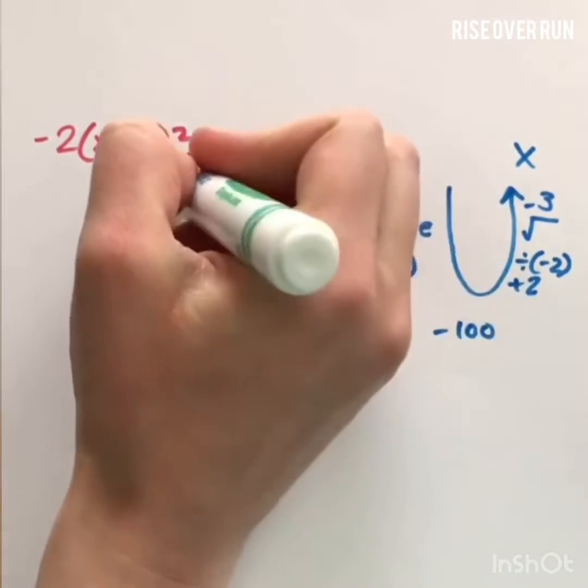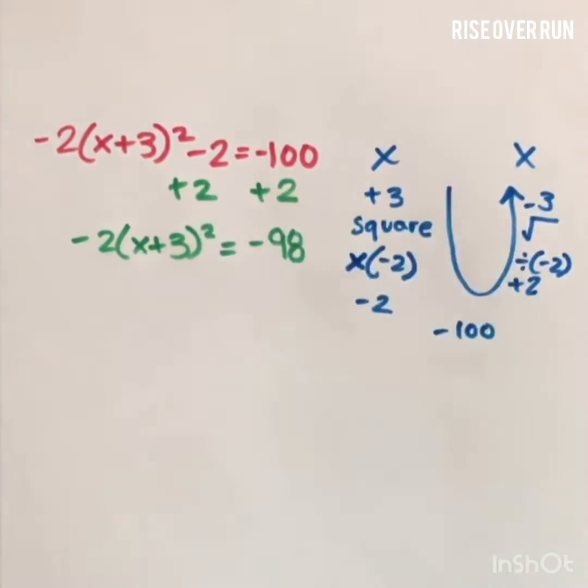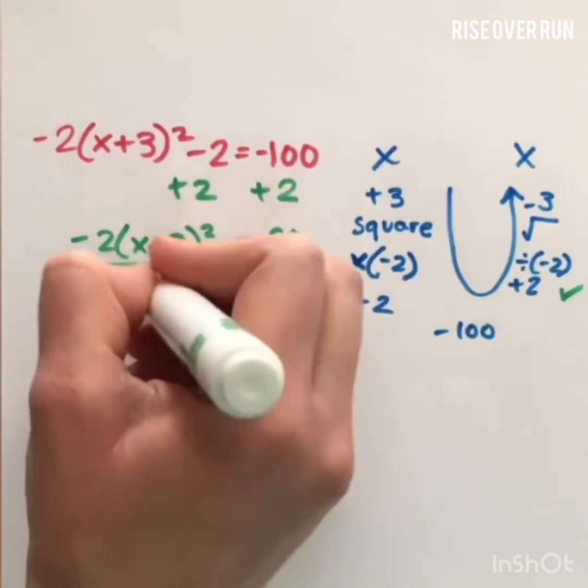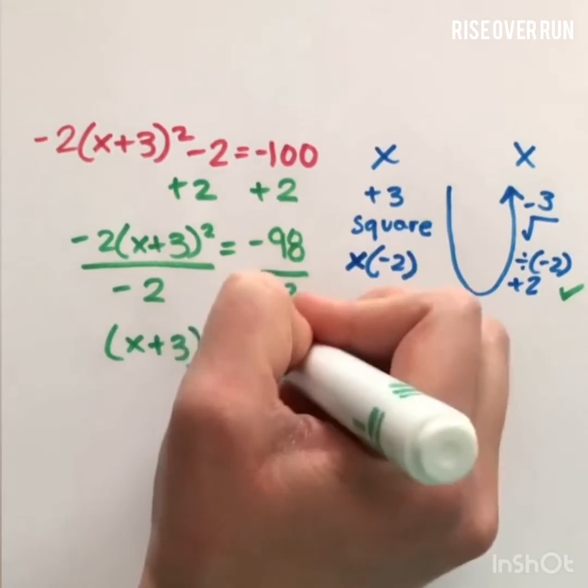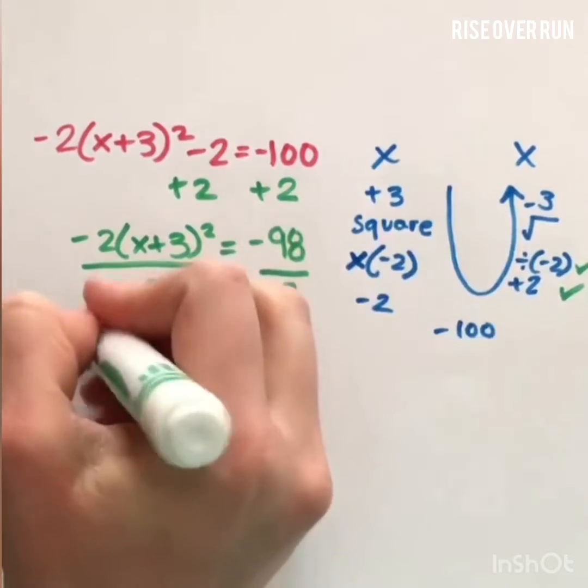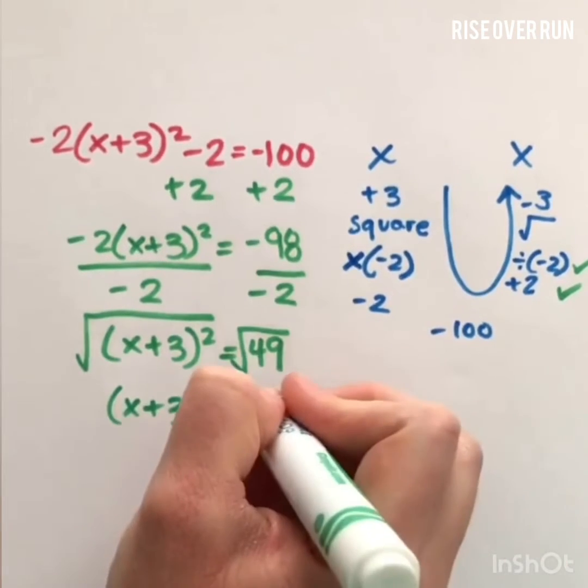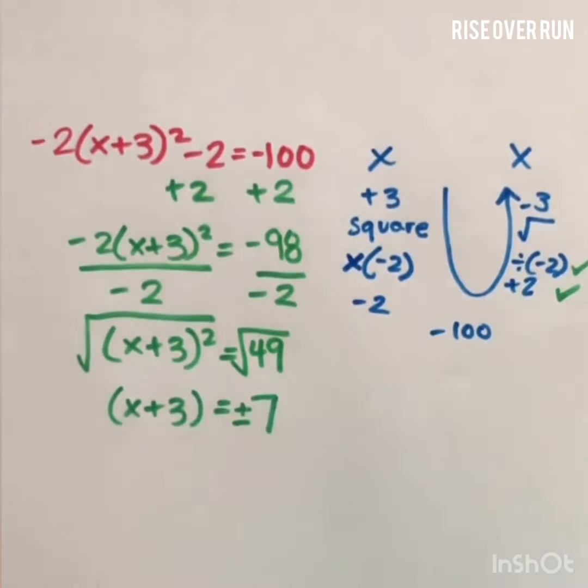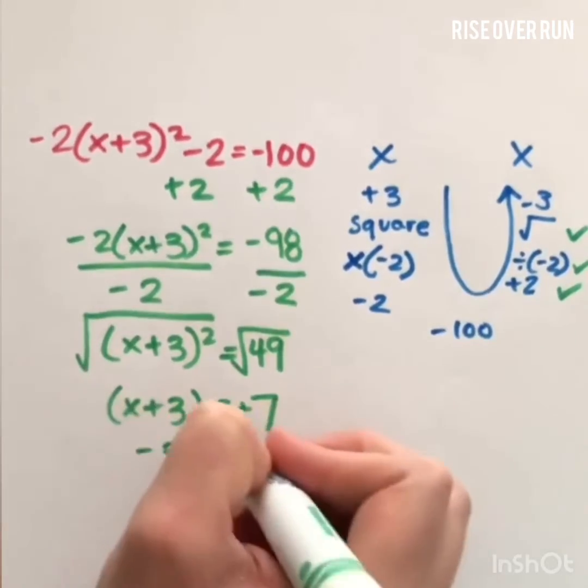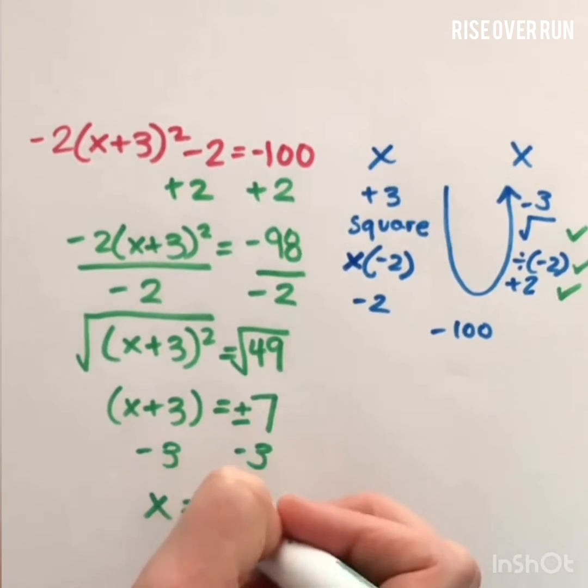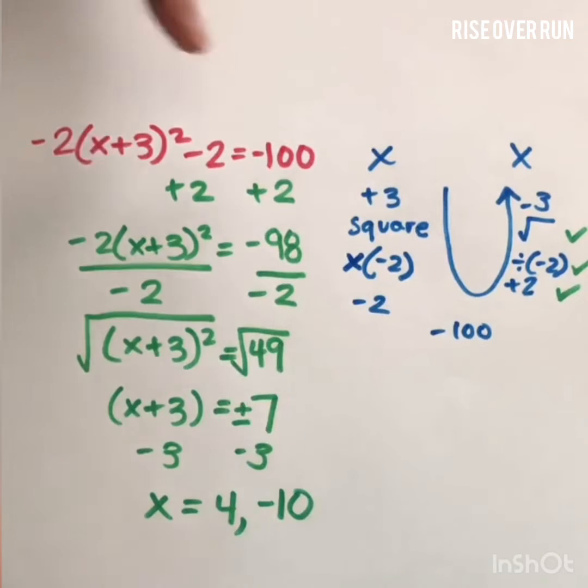Next up, we'll divide by a negative 2. Negative 98 divided by a negative 2 is positive 49. Then we'll take the square root. A square root is the inverse of squaring. The square root of 49 is 7, but there are two answers here. There's a positive and a negative 7, depending on what situation. You may need both of those. Next up, we'll subtract 3 from both sides. So x equals, if we have a positive 7 minus 3, it's 4. If we have a negative 7 minus 3, it's negative 10. Both of these solutions can be plugged in for x, and if you work it out, this equation will be true.